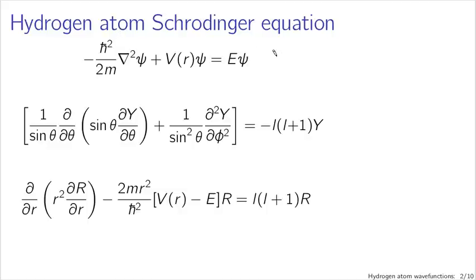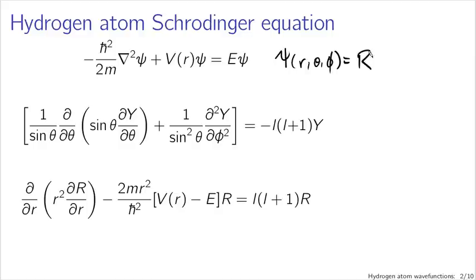Applying our usual separation of variables to this function — psi of r, theta, and phi — using spherical coordinates, since our potential in the case of the hydrogen atom is a function only of radius, we're separating a radial equation from an angular equation.